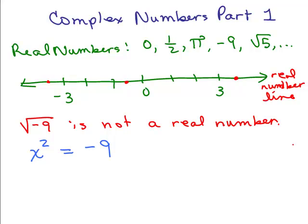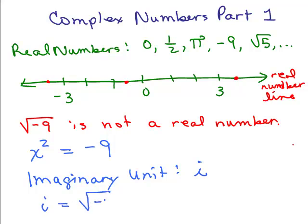So, the complex numbers were formed, and that's what we're going to go over now. The first thing we have to know about complex numbers is that there's an imaginary unit called i. What does i mean? i is the number square root of negative 1. This is the definition, which means that i squared equals negative 1. So, now there is some number that when you square it, it's equal to a negative number.